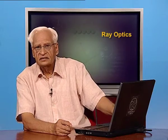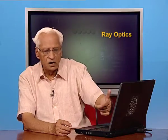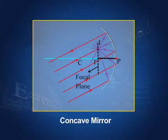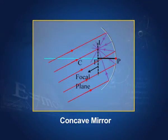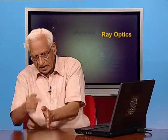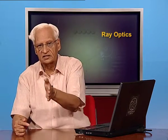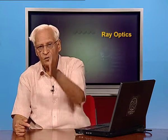It is not necessary that parallel rays are always parallel to the axis — they may be inclined to the axis, but still parallel to each other. After reflection, they will meet at a point, but this point is not on the axis. This point is in a plane which passes through the focus and is perpendicular to the axis — called the focal plane.